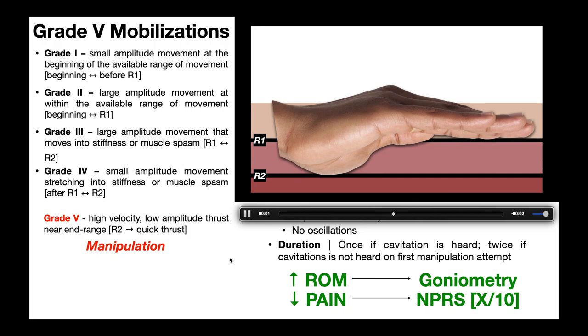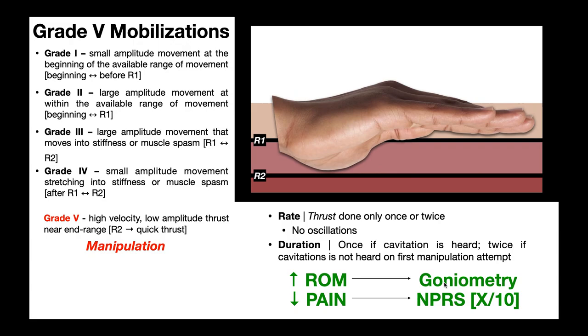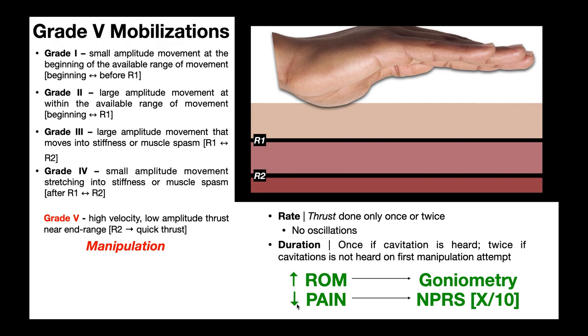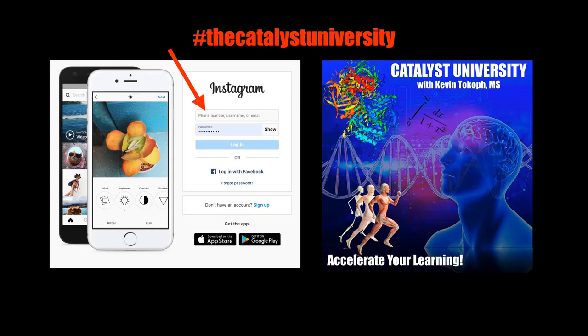In general, with grade five mobilizations or manipulations, they can actually both increase range of motion — which you can assess by functional movement or goniometry — and also reduce pain, which you can assess using the numeric pain rating scale. Hopefully this video gave you a good understanding of the Maitland classifications for mobilizations and the difference between the manipulation (grade five) and the other types of mobilizations. Thanks for tuning in — please like, subscribe, and check out my Instagram for cool science content.